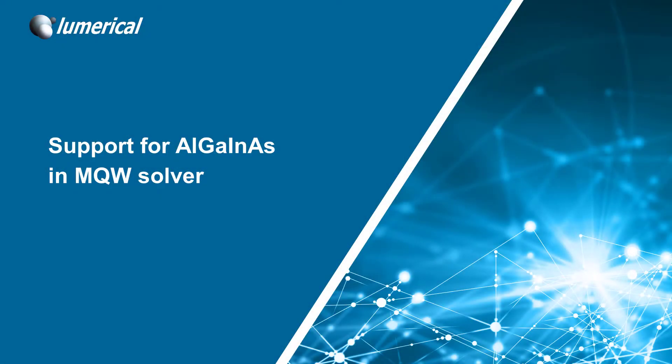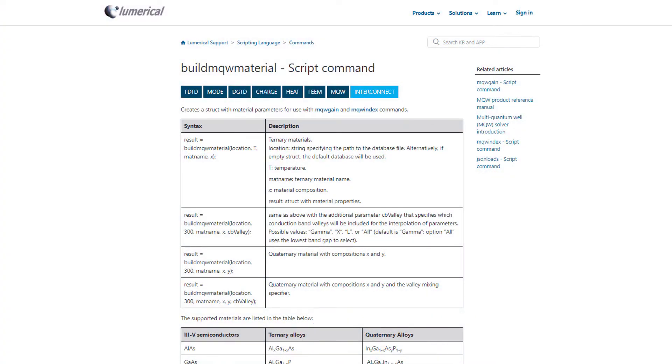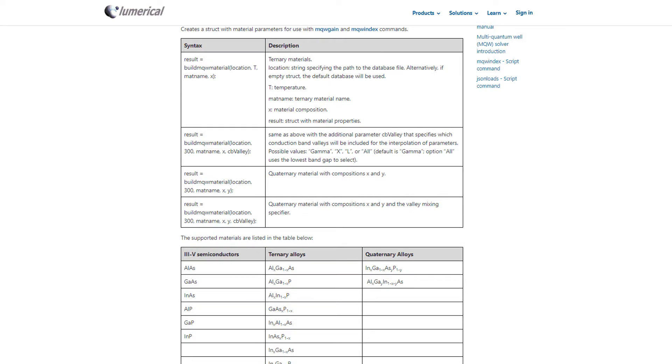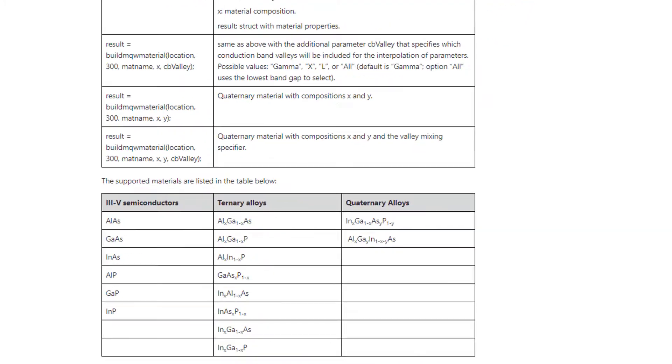Hi, welcome to Lumerical Sparked, our weekly series highlighting new features requested by customers. This week we present the ability to support aluminum gallium indium arsenide, a new quaternary material in the MQW solver. This quaternary is common in light sources for integrated photonics where gallium arsenide substrate is used.